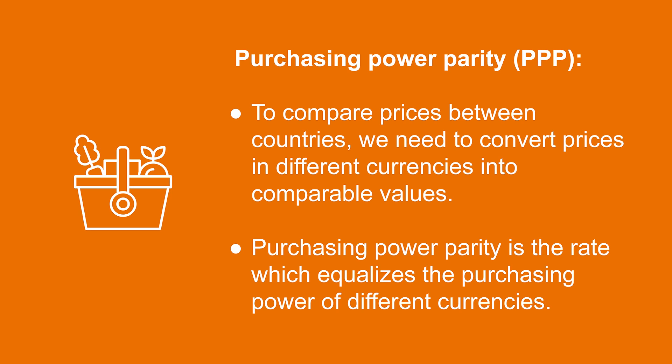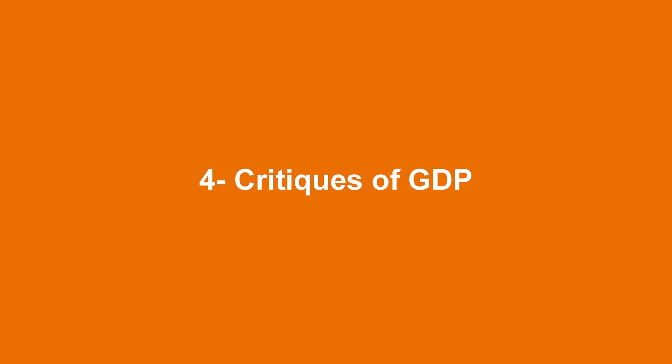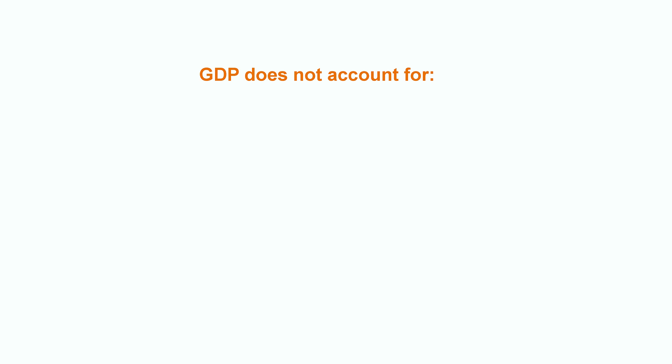Purchasing power parity is the rate which equalizes the purchasing power of different currencies. Now that we have an understanding of what GDP is and how to measure it across time and across countries, let's discuss some critiques of GDP. GDP is a good measure of economic well-being for most, but not all, purposes. It does not account for several important aspects. Firstly, GDP says nothing about the distribution of income in society — that is, inequality. You can imagine two countries with the same level of GDP per person.